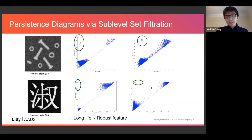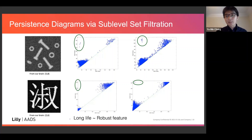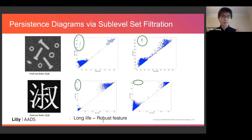The intuition when teaching students about persistent diagrams is to look for the long-life generators. If I look at a grayscale image, I might see white regions — those are one-dimensional holes. From the first-level persistent diagram, you can count the long-life generators. We teach students that the long-life generator is the robust feature in your image or space.